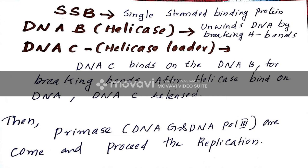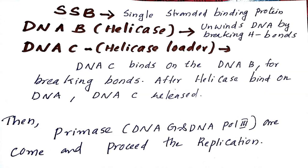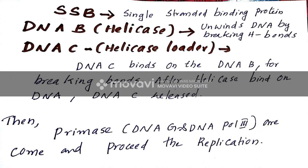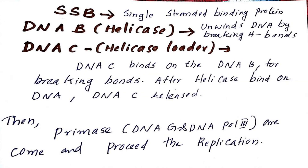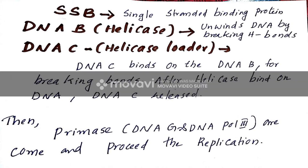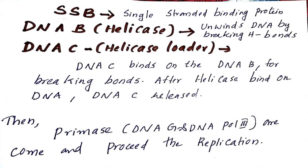As you can see in this picture, SSB is the single-stranded binding protein, and DnaB is the helicase in prokaryotes. DnaB unwinds the DNA by breaking hydrogen bonds. SSB prevents the re-annealing of the DNA strands.